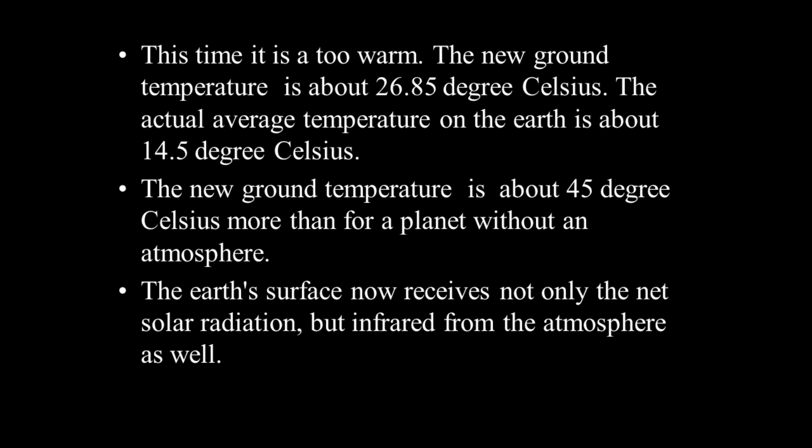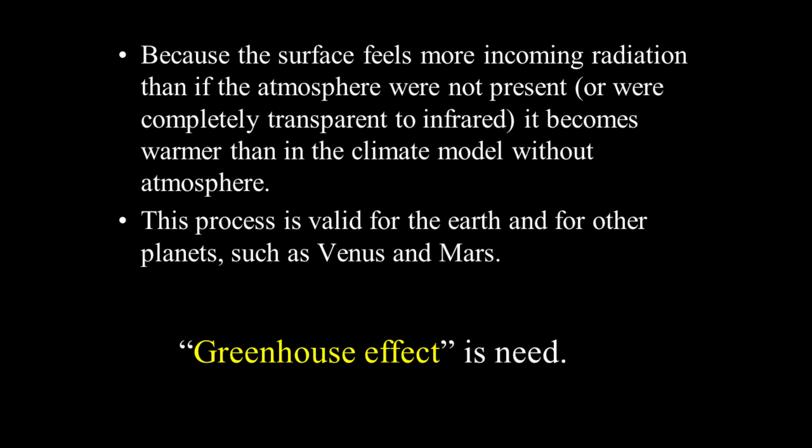The Earth's surface now receives not only the net solar radiation, but also infrared from the atmosphere. Because the surface feels more incoming radiation than if the atmosphere were not present or were completely transparent to infrared, it becomes warmer than in the climate model without atmosphere. This process is valid for the Earth and for other planets such as Venus and Mars. The greenhouse effect is needed.